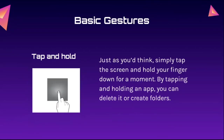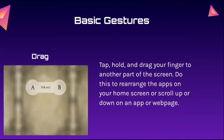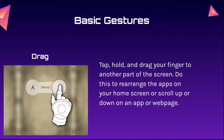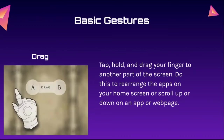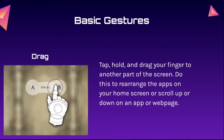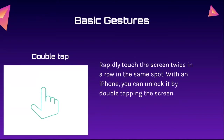Tap and hold is just as you think — you tap the screen and then hold your finger down for a moment. By tapping and holding an app, you can delete it or create folders. For dragging, you tap, hold, and drag your finger to another part of the screen. You can do this to rearrange apps on your home screen or scroll up and down on an app or a web page. Double tapping is when you rapidly touch the screen twice in a row in the same spot. With an iPhone, you can unlock it by double tapping the screen.